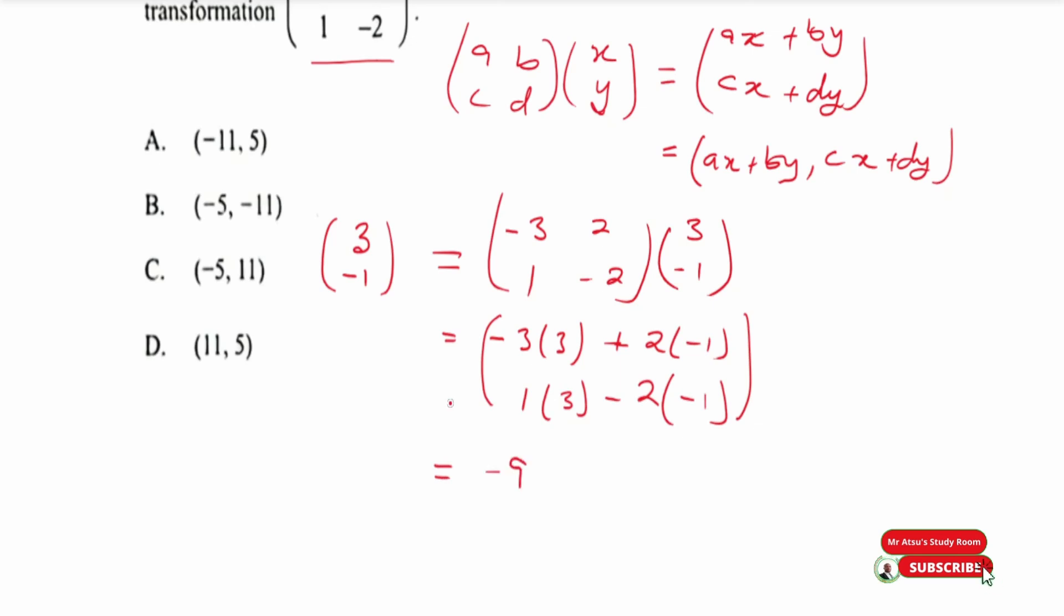This will give us negative 9 plus... let's not talk too much writing. So if you put the top one into your calculator it should give you negative 11, and then the bottom into your calculator should give you 5. To write this as a point, that becomes (-11, 5). And looking through the options, that is option A.